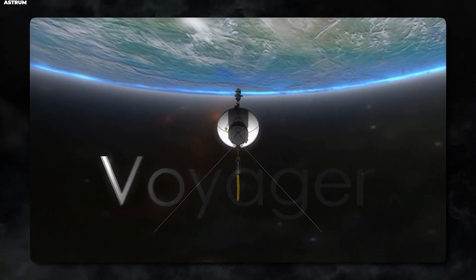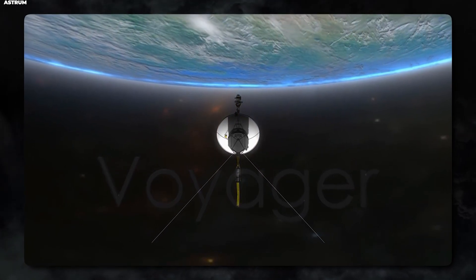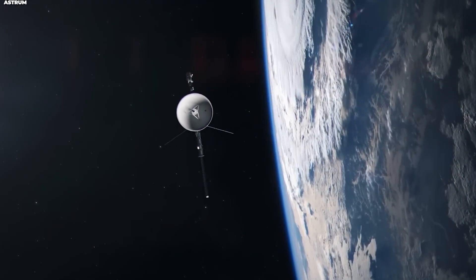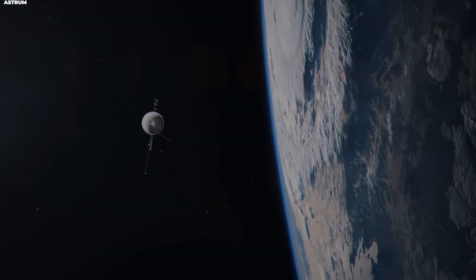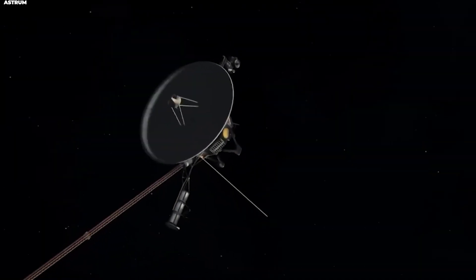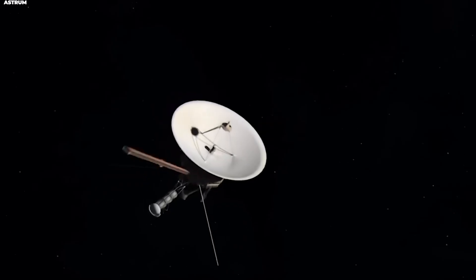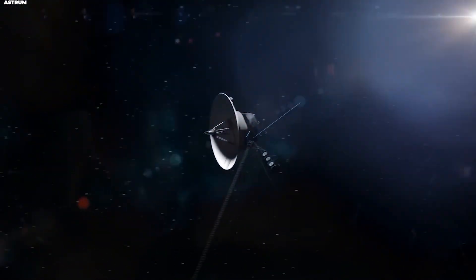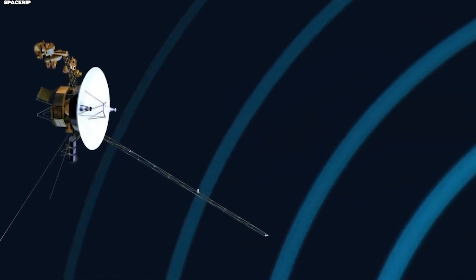As of 2025, Voyager 1 is approximately 15.3 billion miles from Earth. To put that in perspective, light from Voyager 1 takes over 22 hours to reach us. When the spacecraft sends a signal home, it travels at the speed of light, and it still takes nearly a full day to get here. That's absolutely mind-blowing.